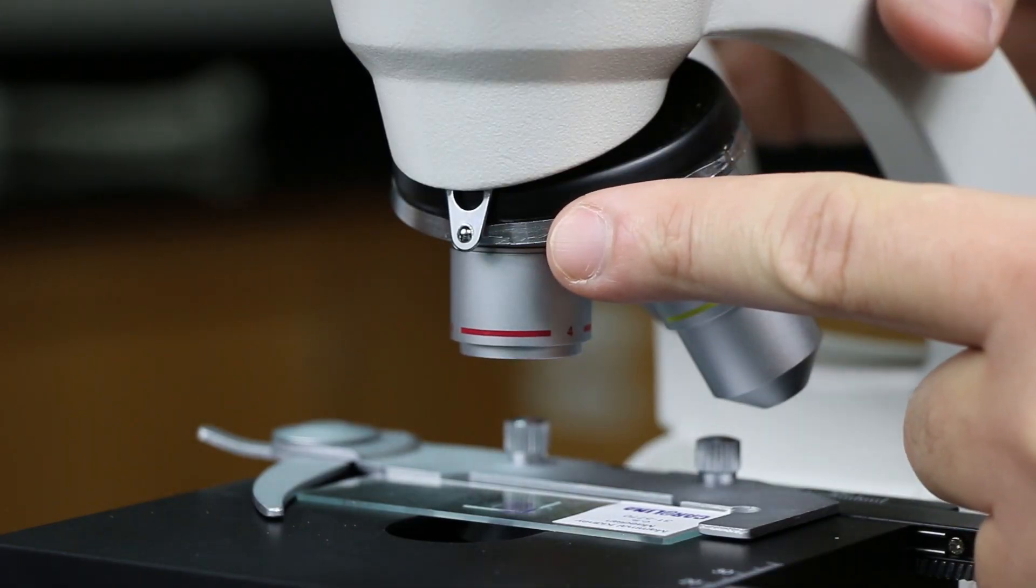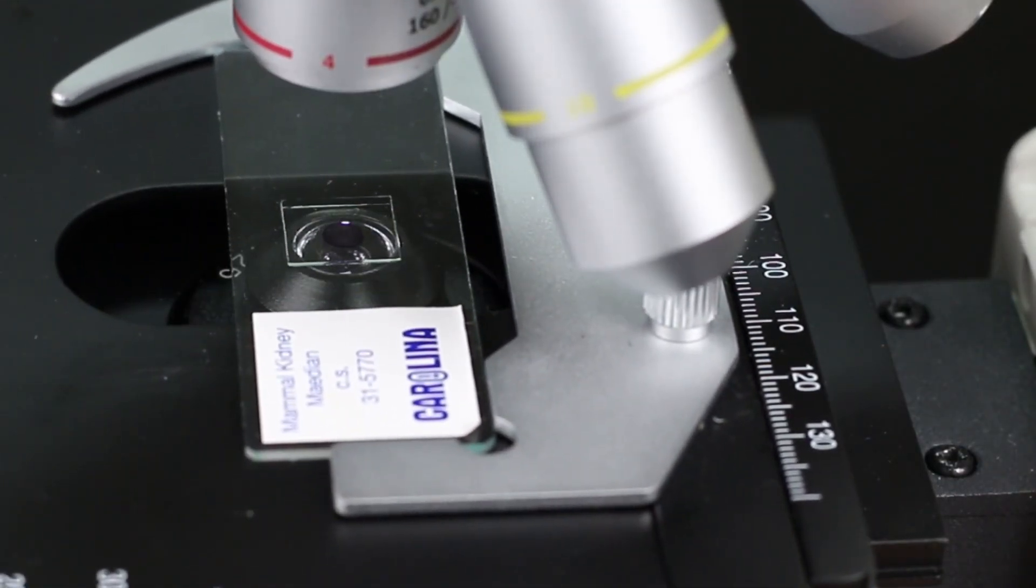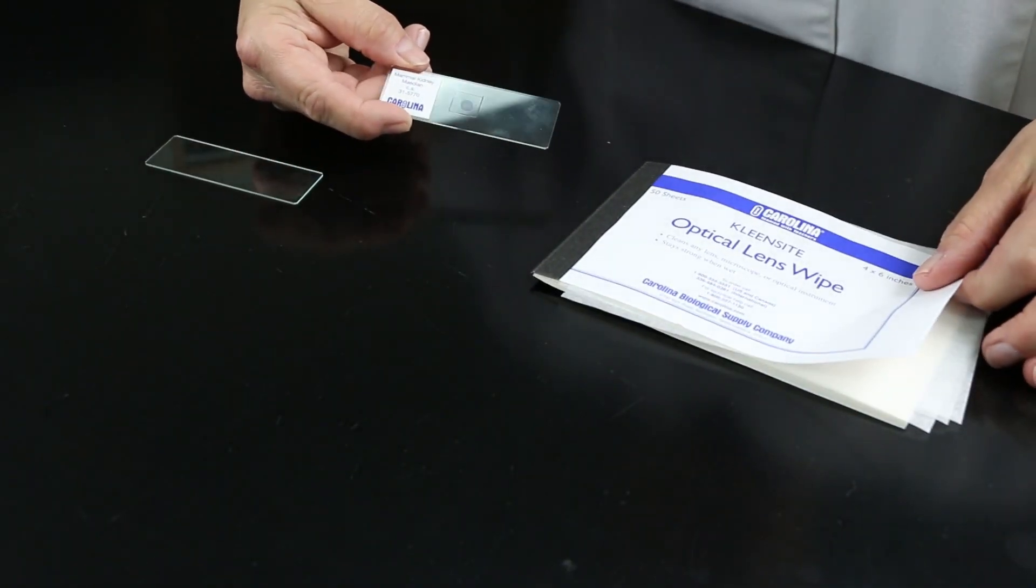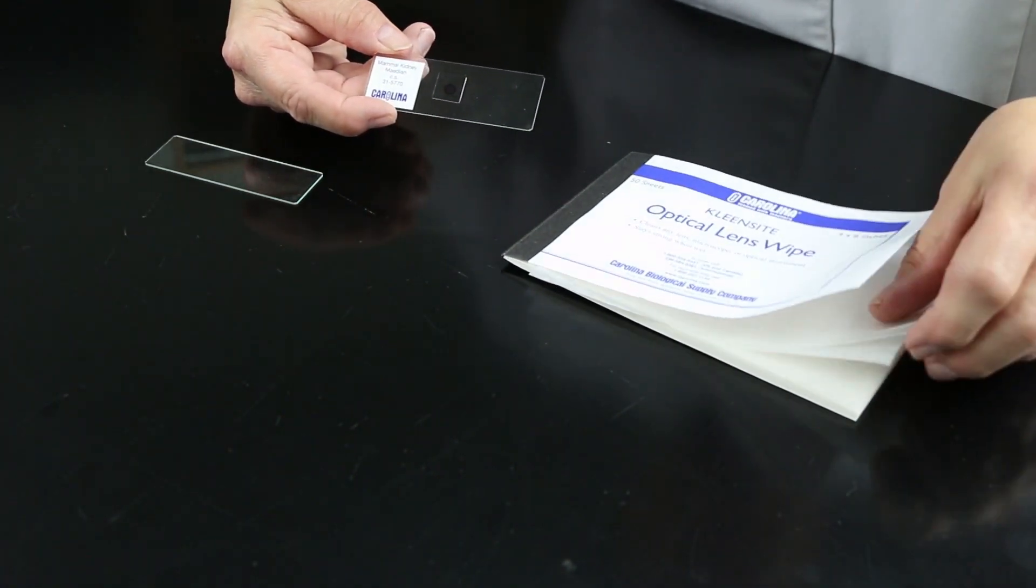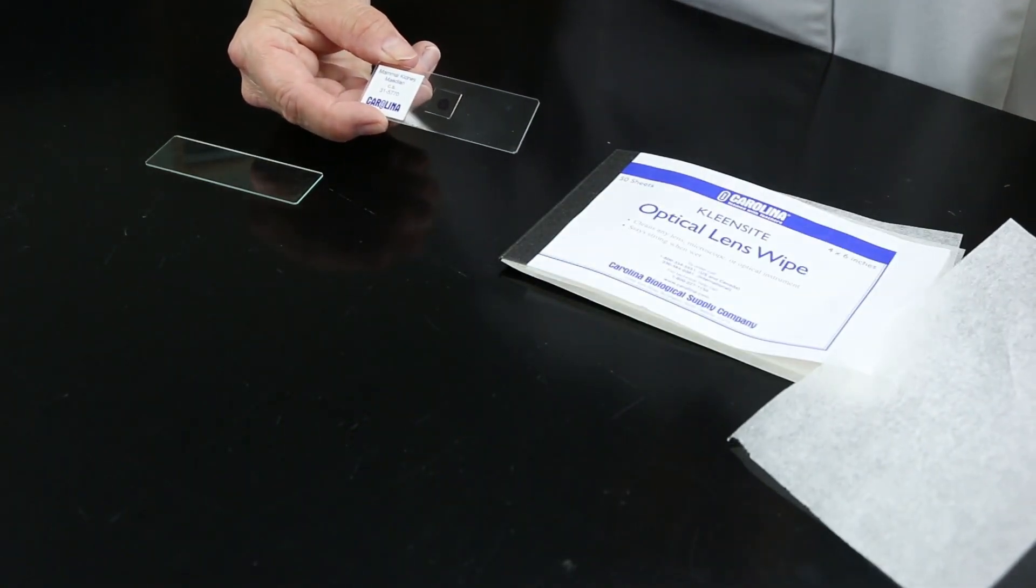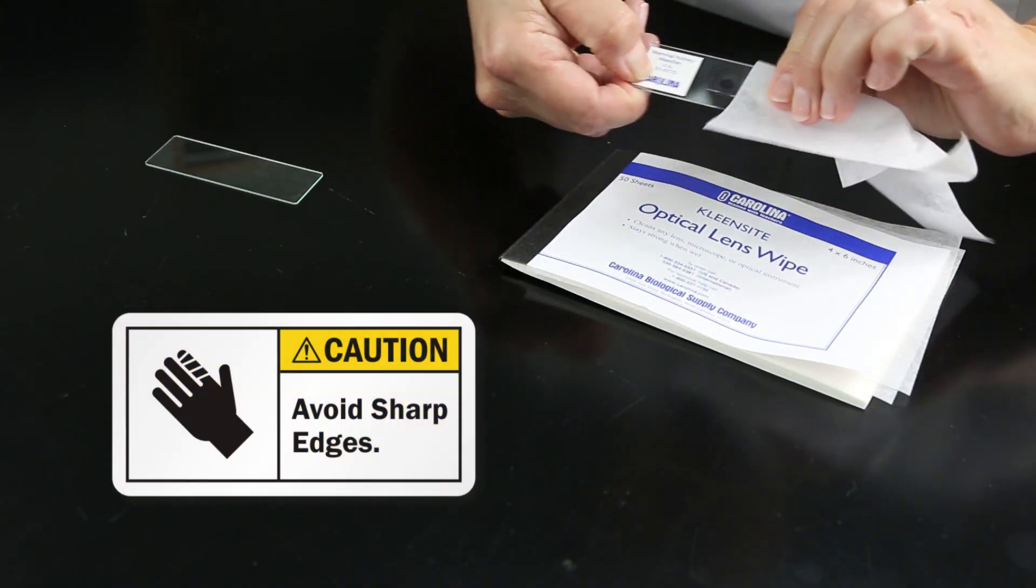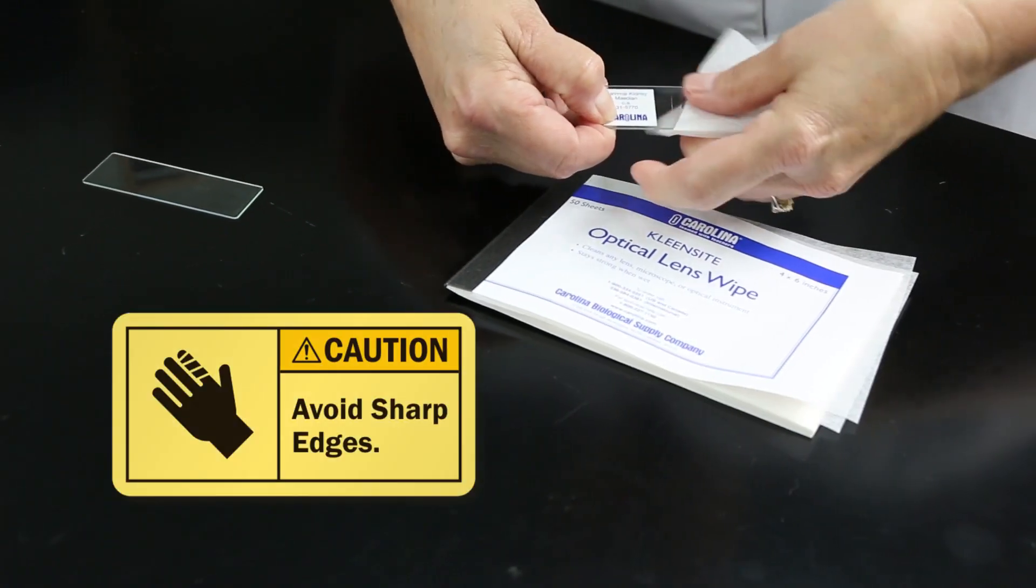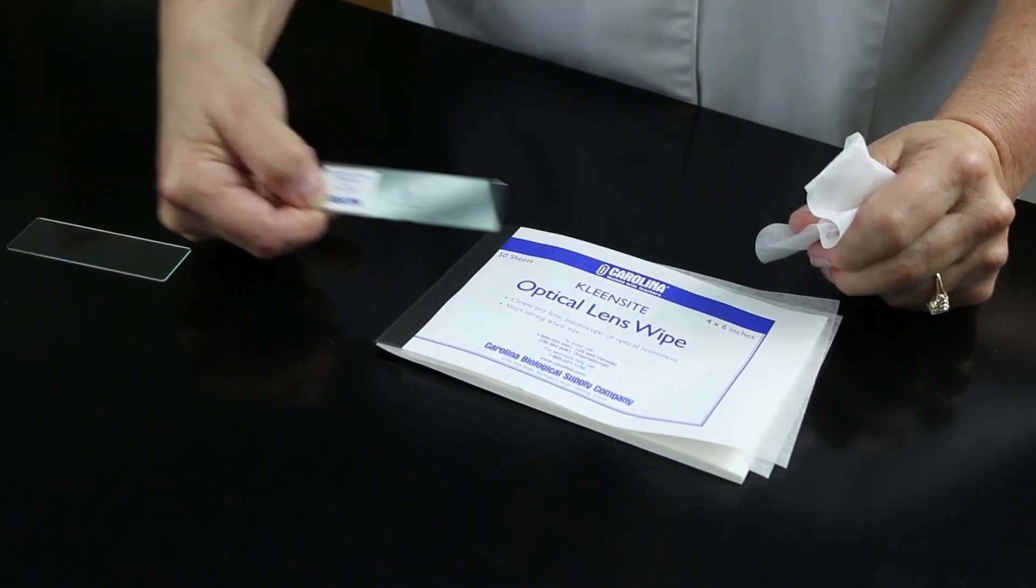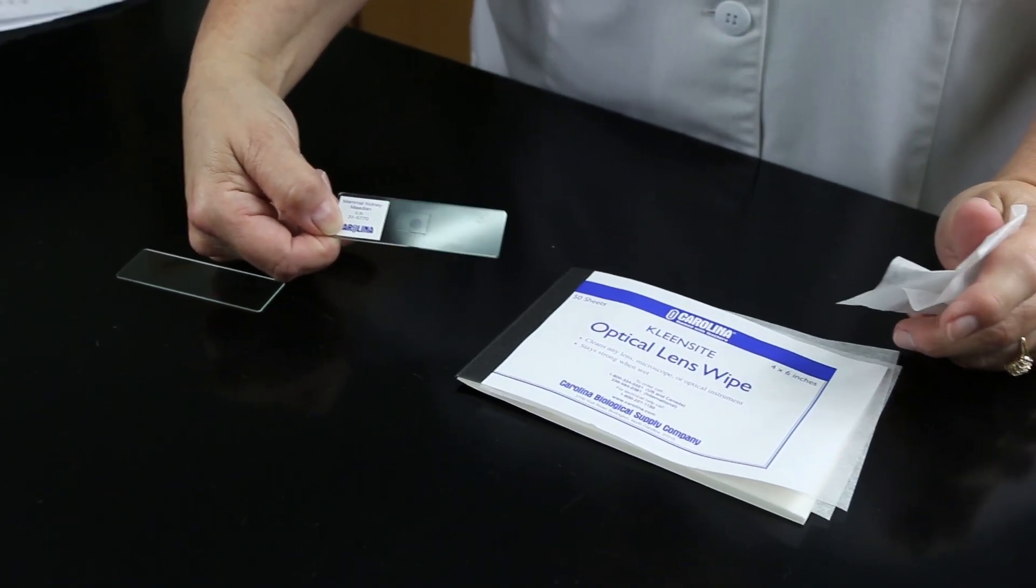Another thing that sometimes is an issue is if the view is blurry. Sometimes of course you haven't gotten it into focus. But then another thing that could be wrong is that your slide is dirty. If your microscope slide is dirty, that's also going to cause some blurriness when you're trying to see it. So what I suggest is that you take some optic lens wipes and gently rub the slide. Be careful not to rub too hard over the specimen, but just around the edges and that should take care of any of the smudginess on your slide that would cause you to have a blurry vision.